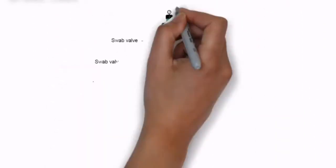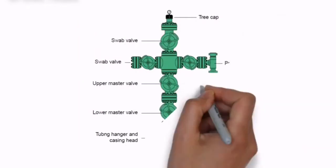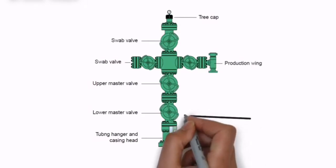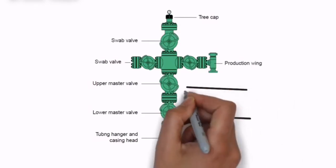The Christmas tree is an assembly of valves, spools, and fittings used to regulate the flow of pipes in an oil well, gas well, water injection well, water disposal well, and gas injection well.